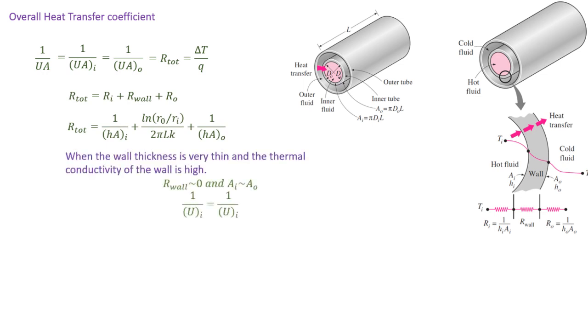Sometimes if the inner tube wall thickness is very thin, we approximate those two areas, AI and AO, to be equal. And in that particular case, it really doesn't matter which side we define that overall heat transfer coefficient on. U for the cold side is equal to U for the hot side.